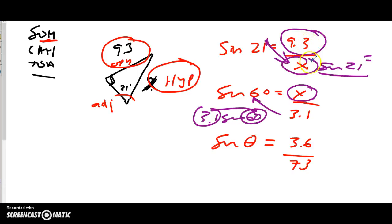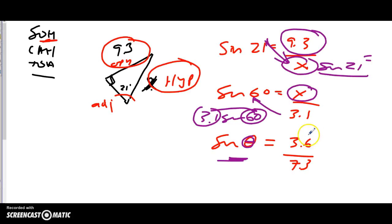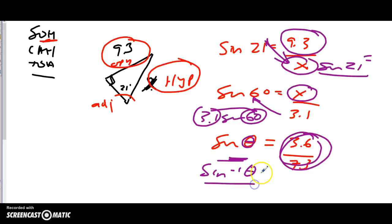If you don't know the angle, you'll get a decimal result. Put that into your calculator and hit second function sine — the inverse sine, inverse tan, or whichever is appropriate — to find the angle. That's a quick review of SOH-CAH-TOA.